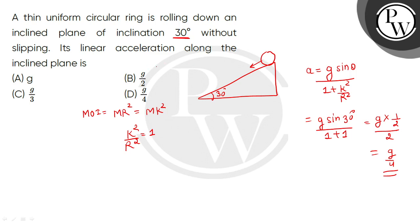So what will the linear acceleration along the inclined plane be? That would be g by 4. Option D would be the correct choice. I hope you all have understood. Thank you so much.